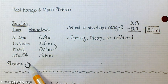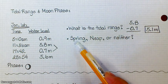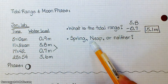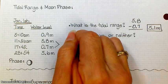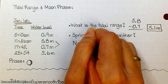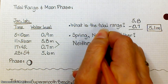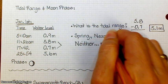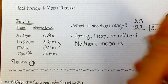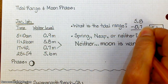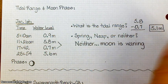That is a waning gibbous, so it's not a spring tide. It's not a neap tide because neap tides occur during first and last quarter moons. So it's not spring, it's not neap, which one is it? It's neither one. Okay, because the moon is a waning gibbous moon.